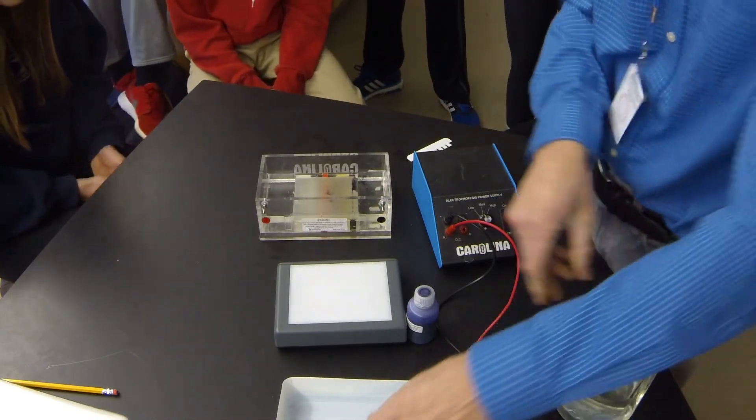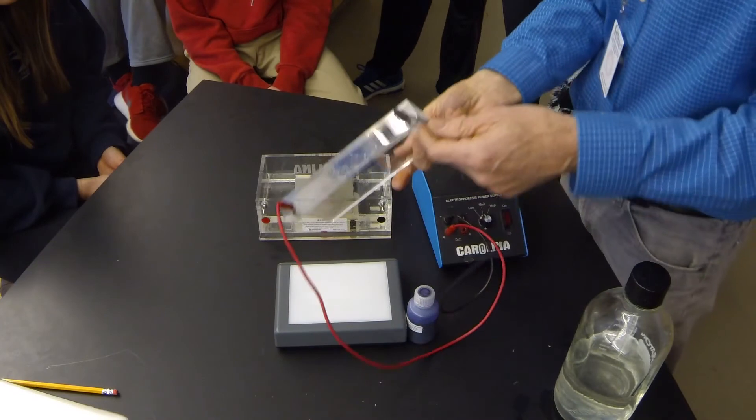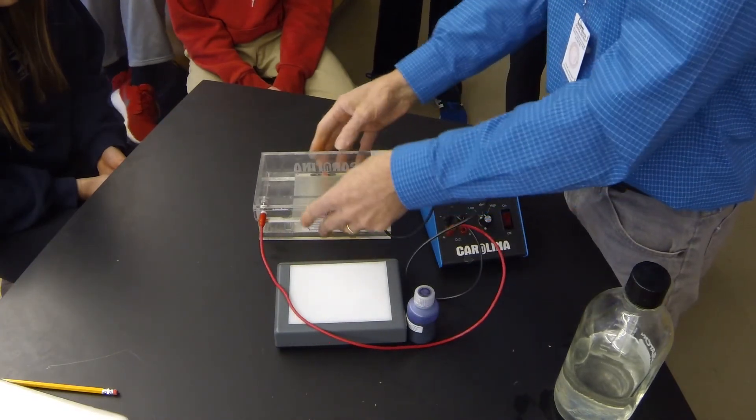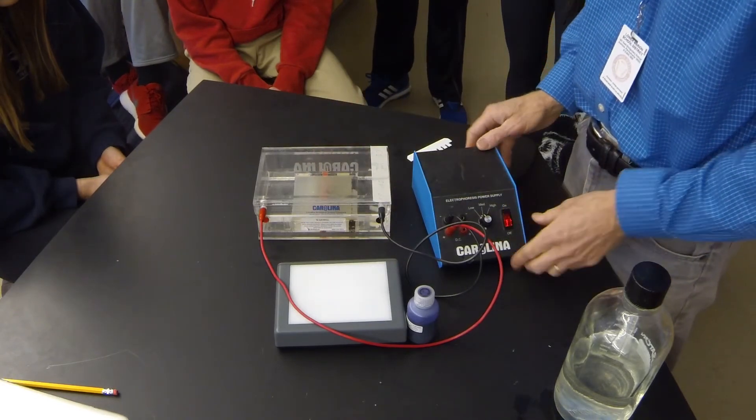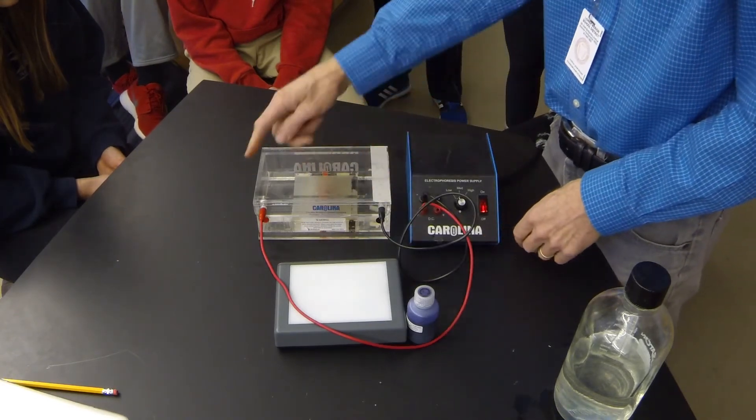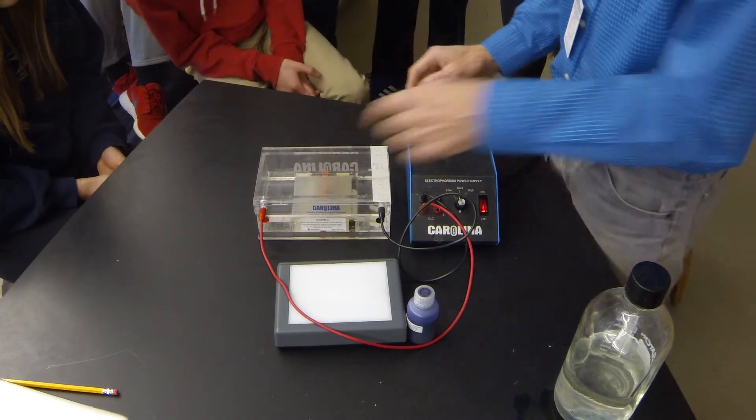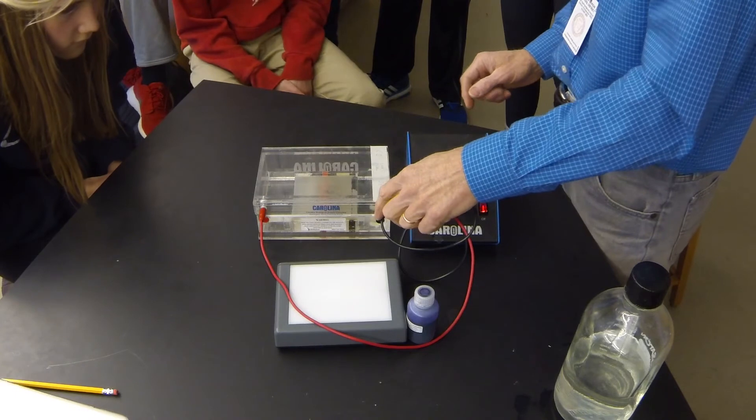And the way it works is this lid has electrical probes hooked to it. When I hooked it like this and turn this thing on, electricity is now flowing through the gel and through the solution. Now this end is a positive end and this end is a negative end.